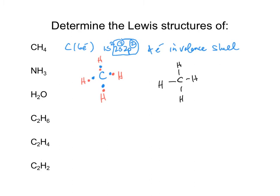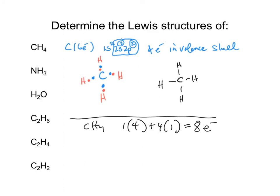The second method: count total valence electrons from the formula. For CH4, one carbon has 4 and four hydrogens each have 1, totaling 8 electrons. Position your atoms and place the bonds in — two, four, six, eight. The reason to go through the detailed dot method is so you have a sense of where the electrons came from and what happened during bond formation.